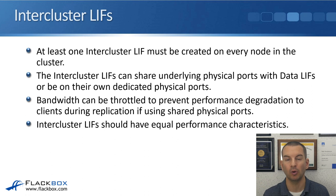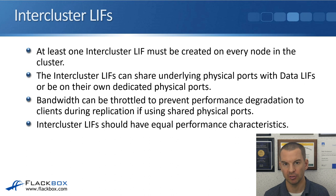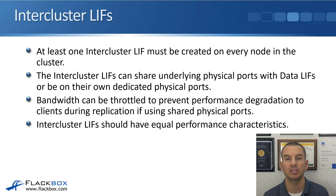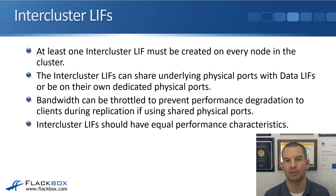So if on the same physical ports you've got client data access running, and whenever a replication runs you don't want that to be taking too much bandwidth away from the client data access, then you can throttle your inter-cluster replication traffic. The other thing you can do is put the inter-cluster LIFs on separate dedicated physical interfaces, and then it's not going to affect your client data traffic.